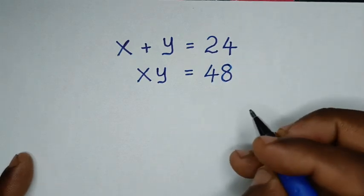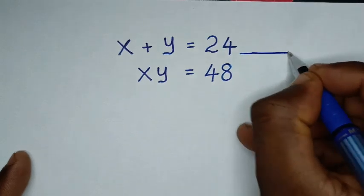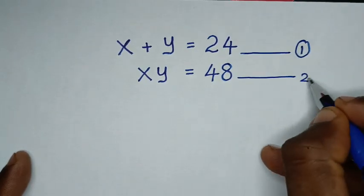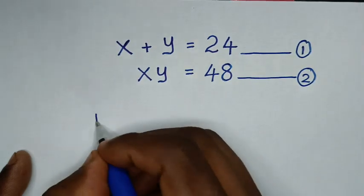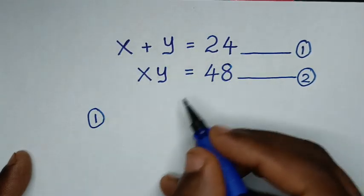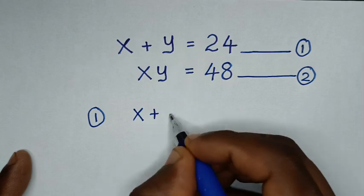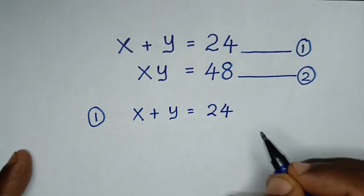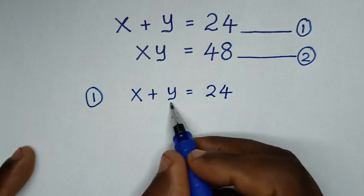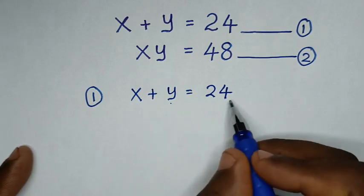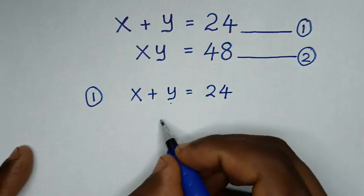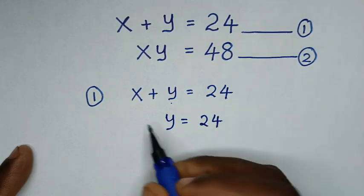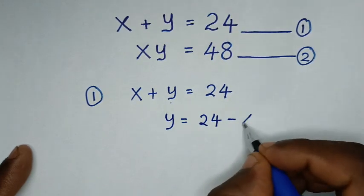Now in the first step, let's start by letting this as equation 1 and this as equation 2. Now from equation 1, which is x plus y is equal to 24. Here we will make y the subject, so we will take x to the right side, so it will be y is equal to 24 minus x.